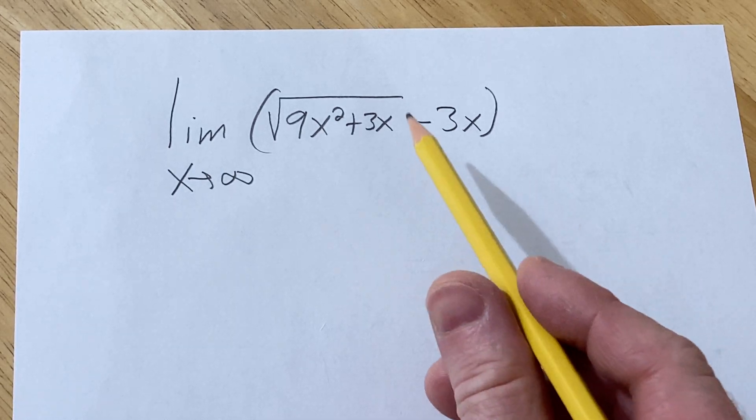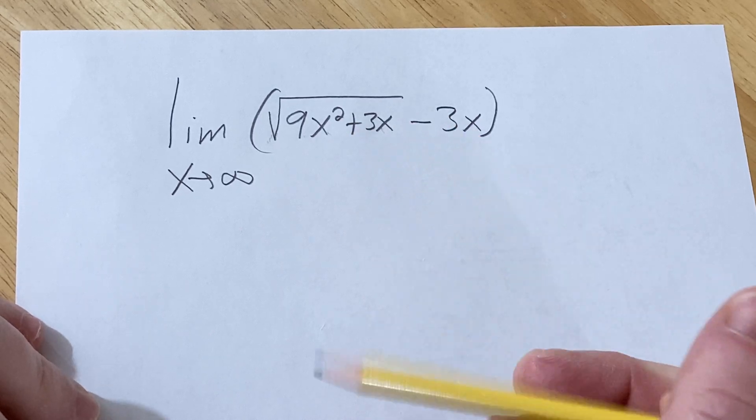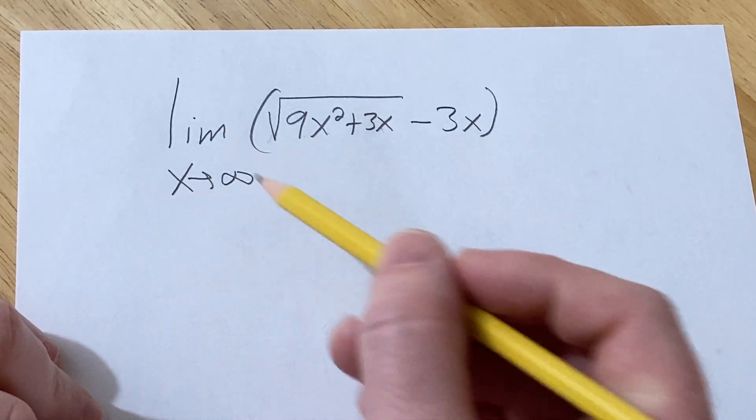Hello, in this problem we are going to find the limit of the square root of 9x squared plus 3x minus 3x as x approaches infinity.